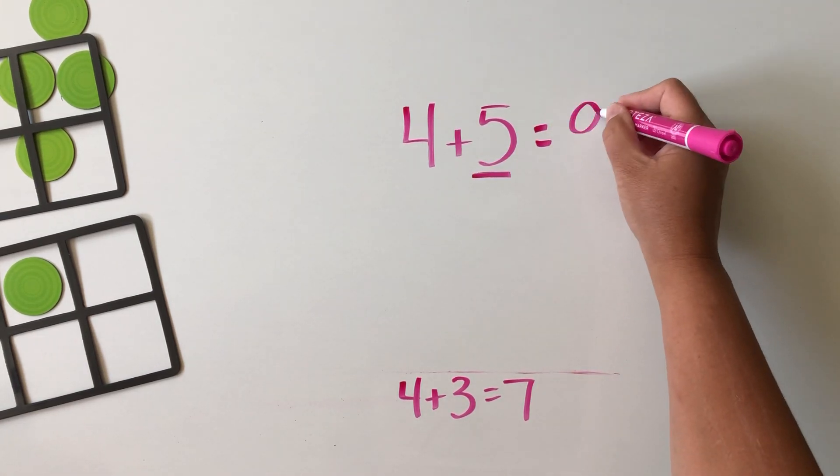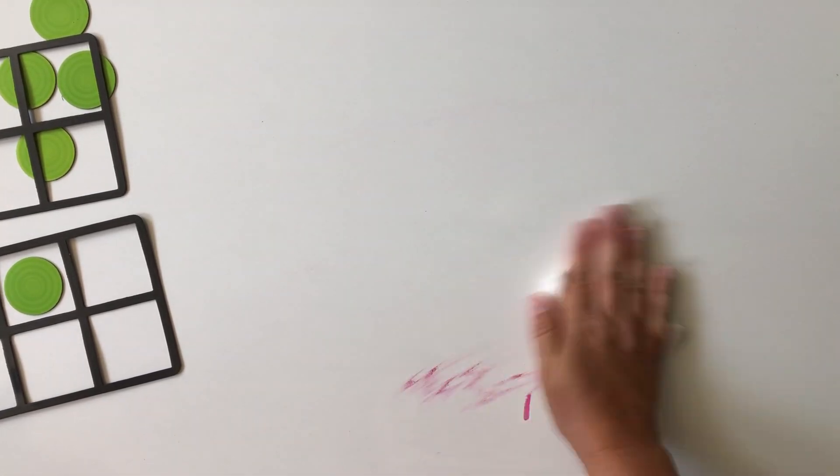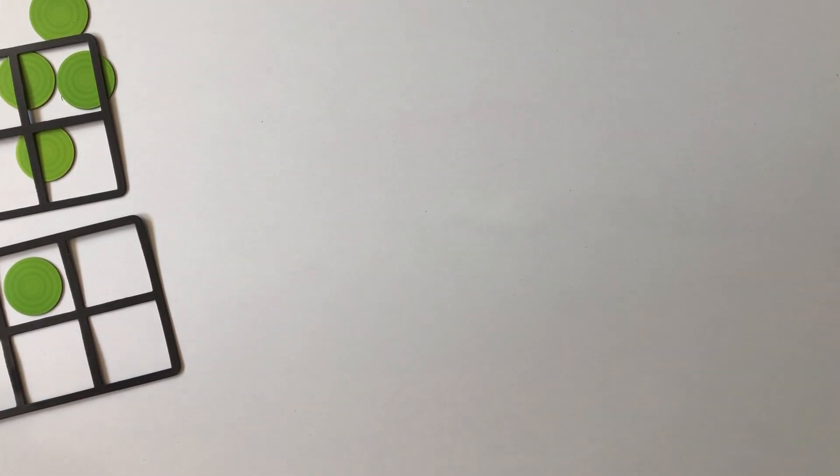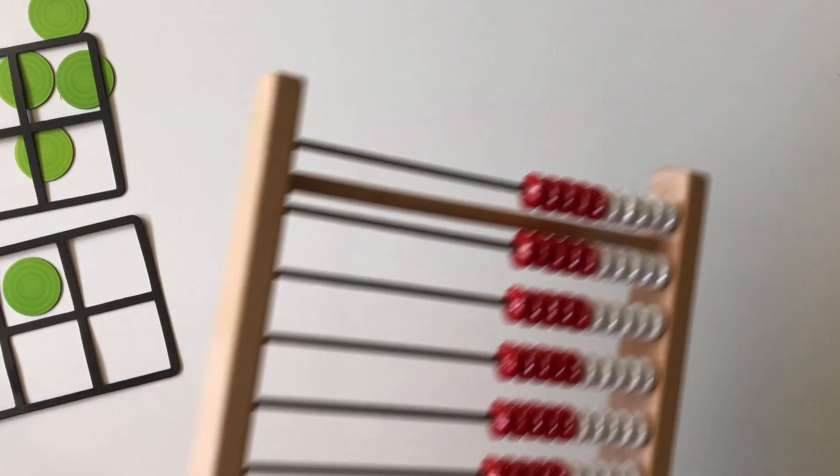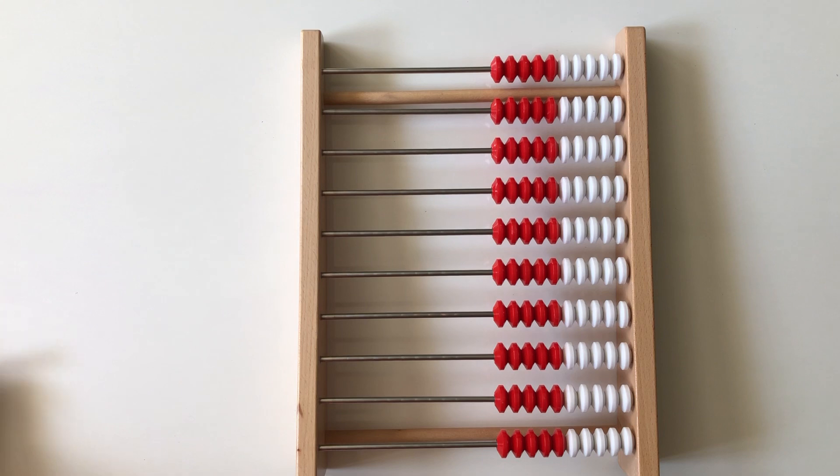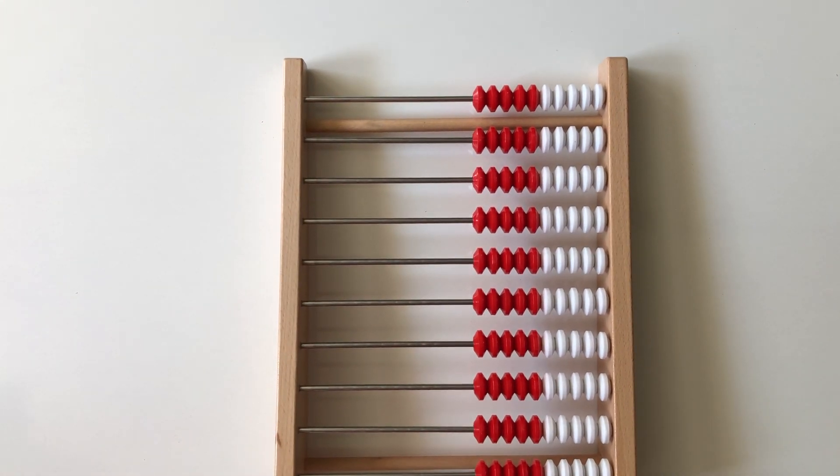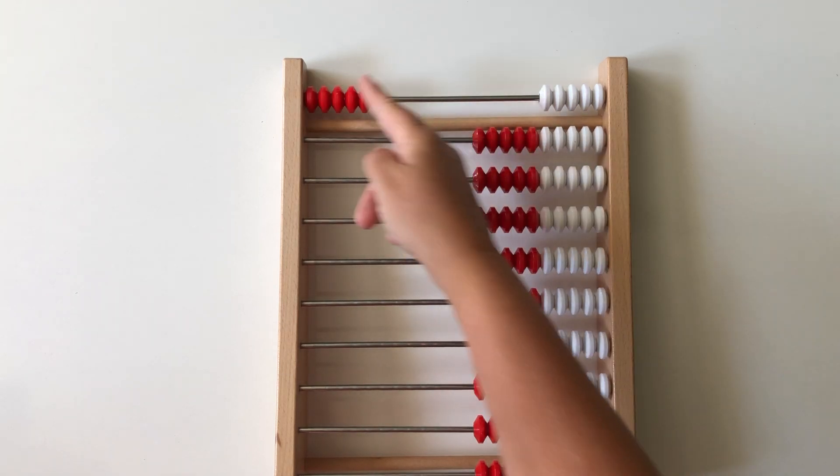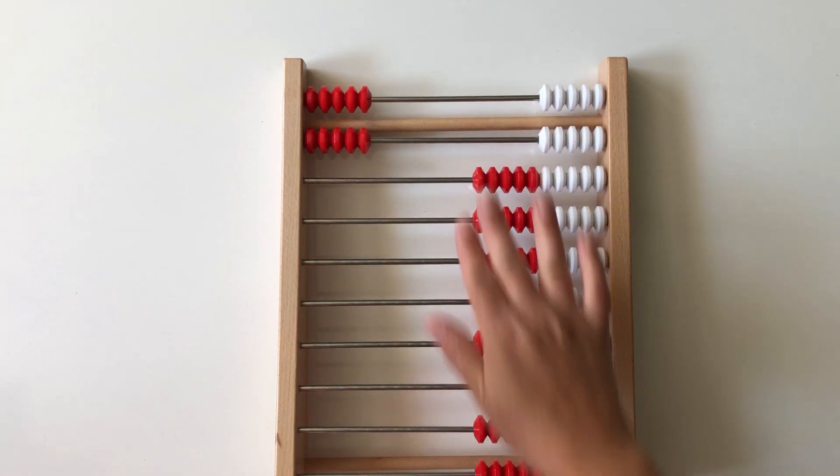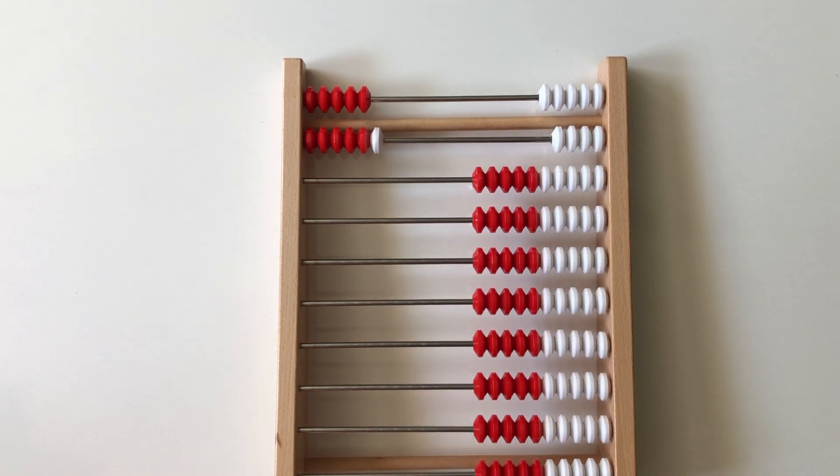Let's see how we could model the near doubles strategy with another one of my favorite tools, which is a rekenrek. Rekenreks just make math really visual, so I love this as a classroom tool. Let's suppose we are showing 5 plus 5 on our rekenrek. Now what happens when we add one more? Now we show 5 plus 6. It's really easy to see that 5 plus 6 is just 5 plus 5 and then one more.